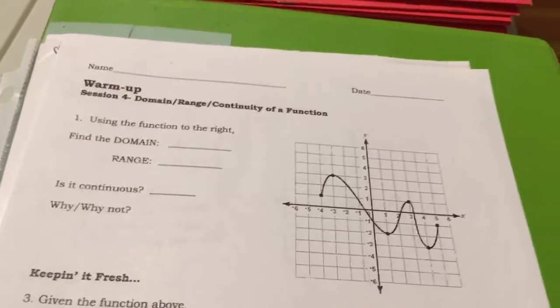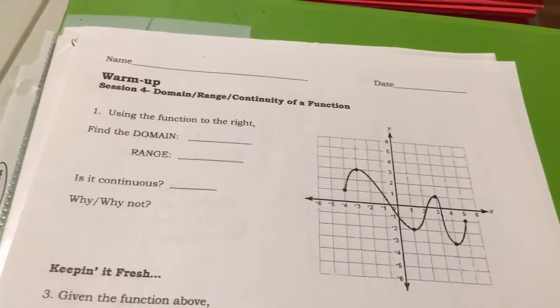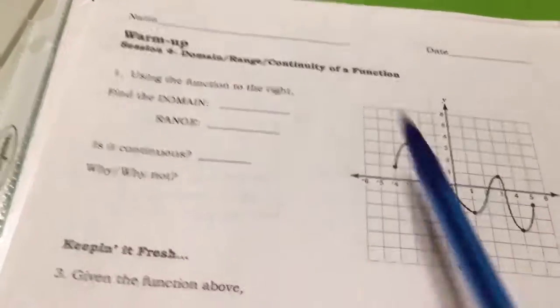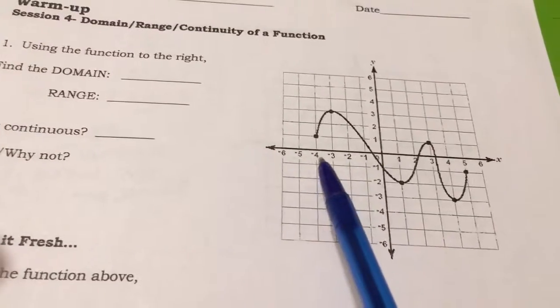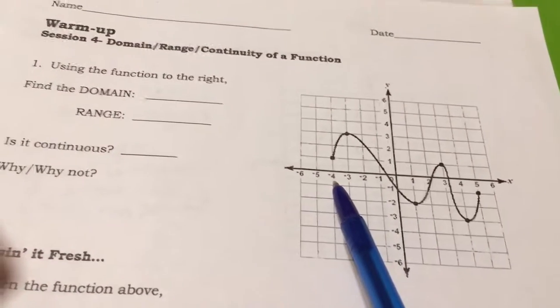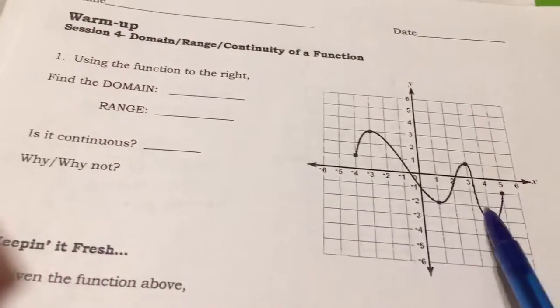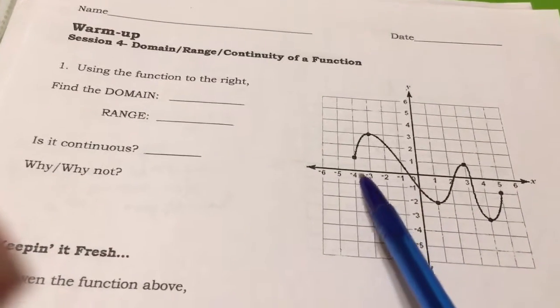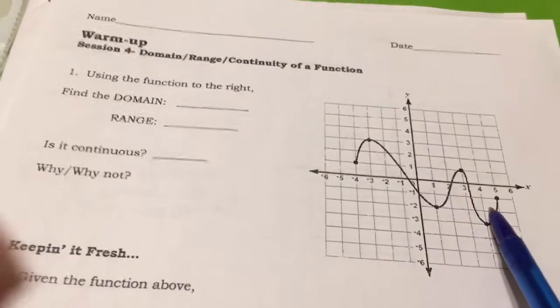Domain, range, continuity of a function. Before you left class, I explained that domain were the x values. Where does x start? It starts here at negative 4 and ends here at 5. You need to write down that the domain starts at negative 4 and ends at 5.